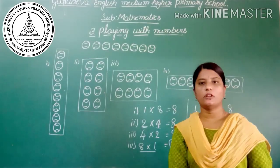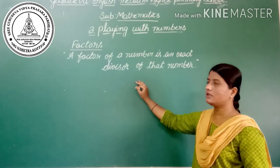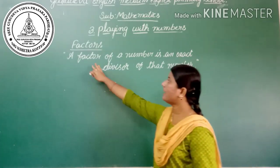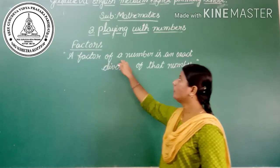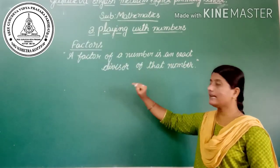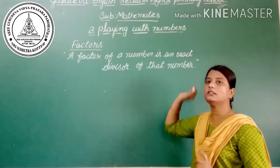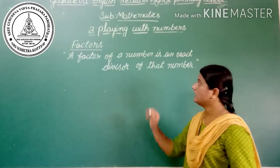Let's see the definition of factors. A factor of a number is an exact divisor of that number.